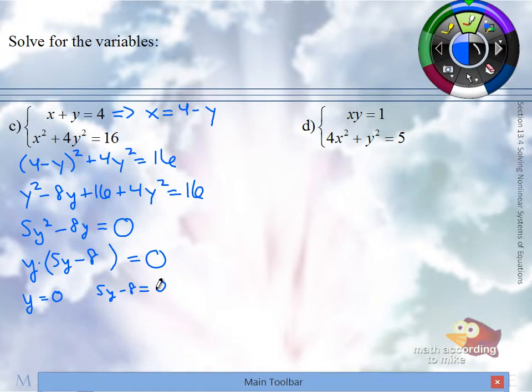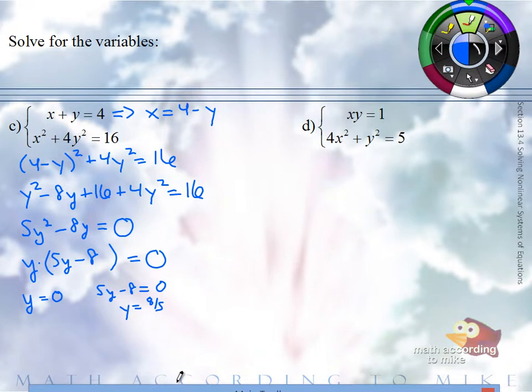If Y equals 0, it equals 0. If 5Y minus 8 equals 0, Y equals 8 fifths. Let's go back and find our X. We're going to use the equation up here. For Y equals 0, we're going to put in 0 for our Y.